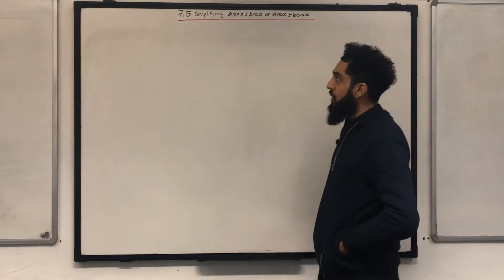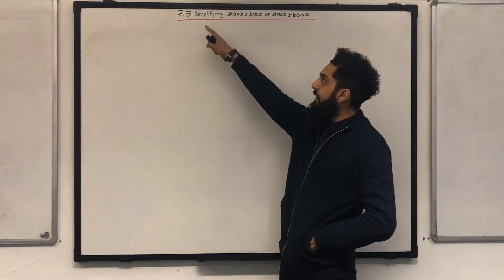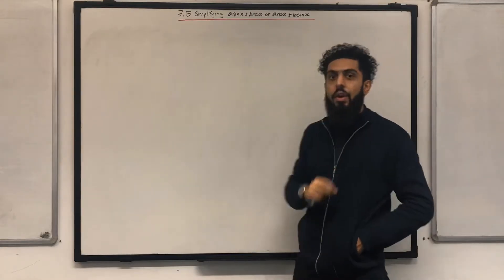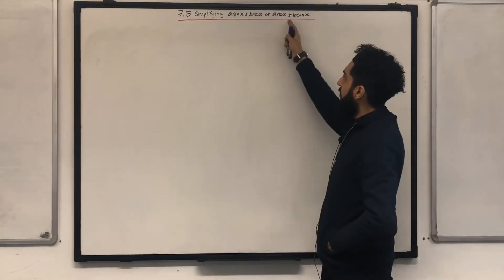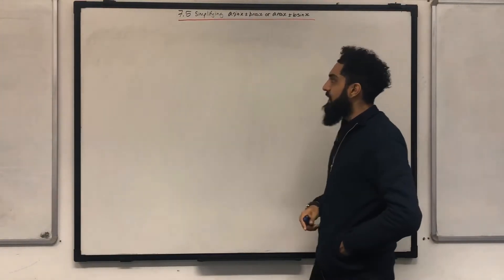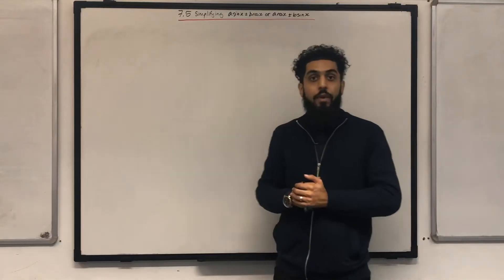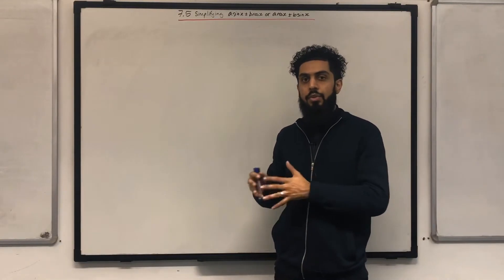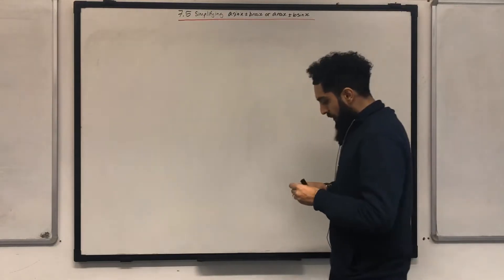In this video tutorial, I'll be looking at 7.5 — simplifying A sinX plus or minus B cosX, or A cosX plus or minus B sinX. 7.5 represents Chapter 7, Section 5 of the Pearson A-level Maths Pure Maths Year 2 textbook.